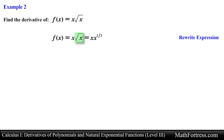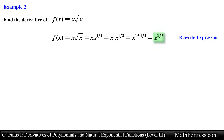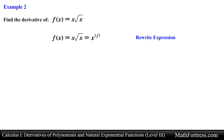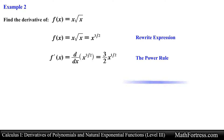The radical function can be rewritten as x raised to the power of 1/2. Notice that you can think of the product x times x^(1/2) as x raised to the power of 3/2. Now we have a function written into a derivative friendly form. All that is left to do is to apply the power rule, resulting in the final expression equal to 3 times the square root of x over 2.